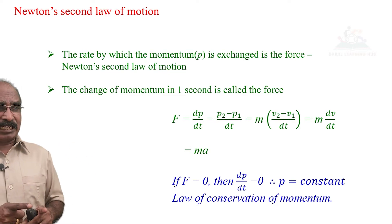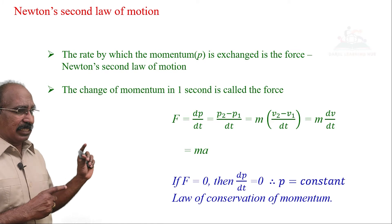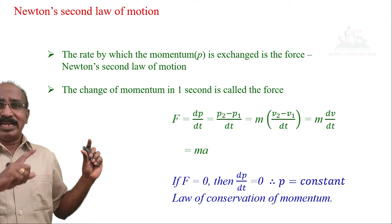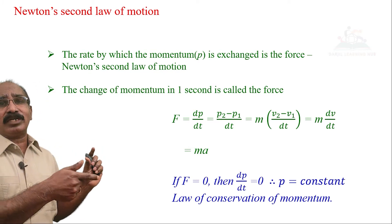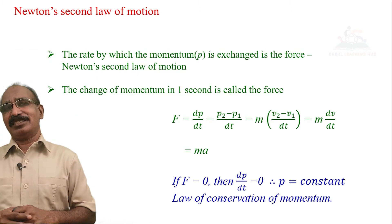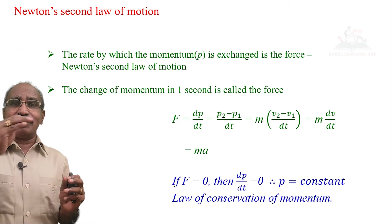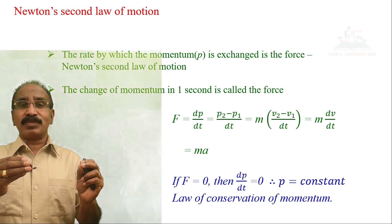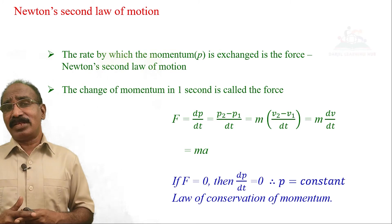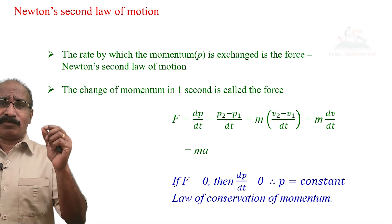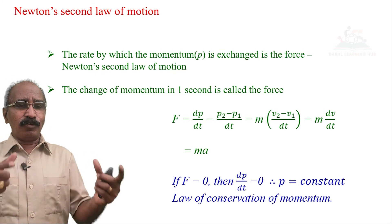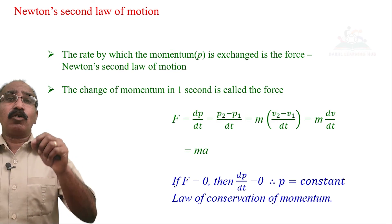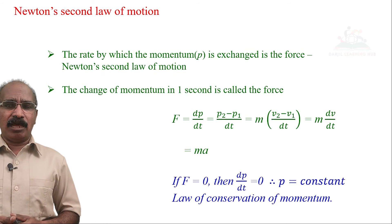Suppose force equals zero — no force is acting on the body. When F = 0, dp/dt = 0. Mathematically, if the differentiation of momentum with respect to time equals zero, then momentum p must be a constant. That is, momentum remains the same when force equals zero. This is what we call the law of conservation of momentum — the momentum before interaction is equal to the momentum after interaction when no force is acting.